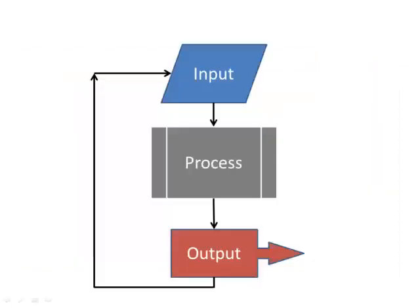Every computer program, no matter how complex or how simple it is, does three main tasks: input, process, and output. A computer game reads the movement of the joystick or the controller buttons — that's its input. It makes decisions based on that input information — that's the processing part — and displays different scenes on the screen based on the input and the processing. So there's your output.